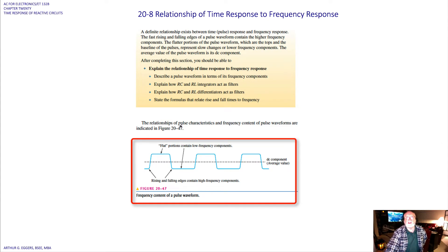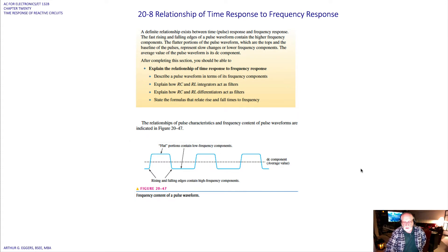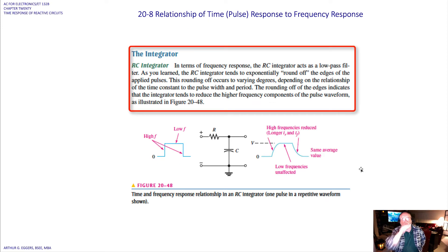We can see the relationships of pulse characteristics and frequency content of pulse waveforms: the rising and falling edges contain the high frequency components, and the tops or flat portions contain the low frequency components.